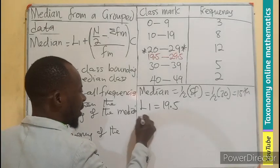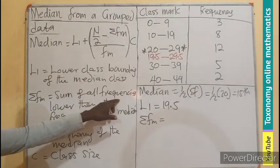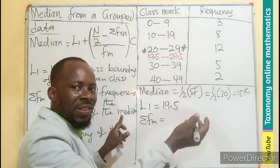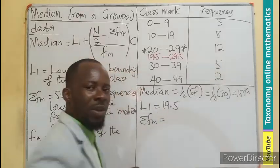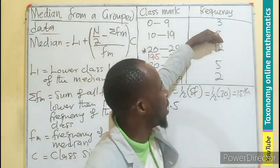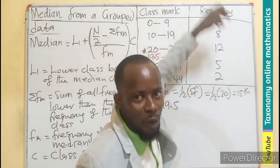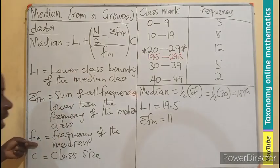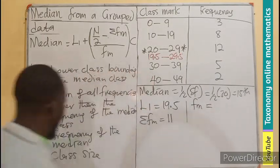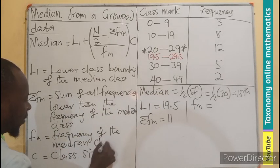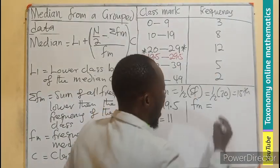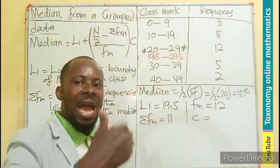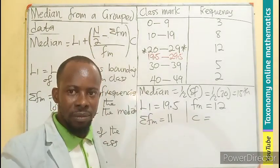The second one which is going to be Σfm, the sum of all frequencies lower than or below the median class, the frequency of the median class. What is the frequency of the median class? This is the median class. Frequency is going to be 12. So we are adding the frequency below, frequency before or lower. So this plus this will give you 11. So this is going to be 11. Then the next one is going to be our fm, which is actually the frequency of the median class. The median class, and the median class is this. So the frequency becomes 12. What do you think the c will be? The c is the class size.